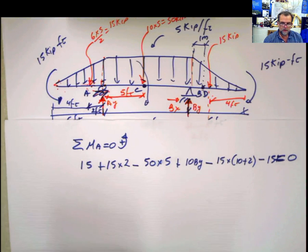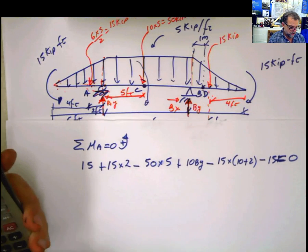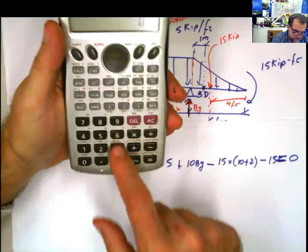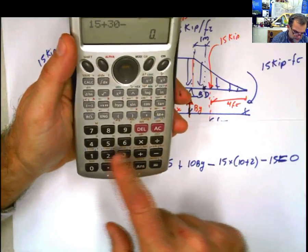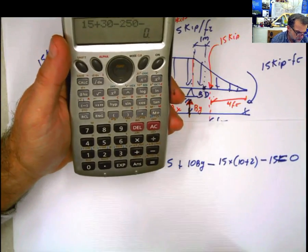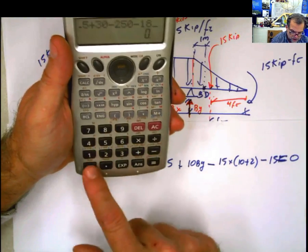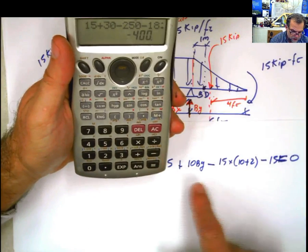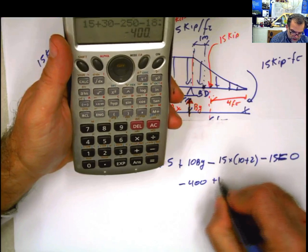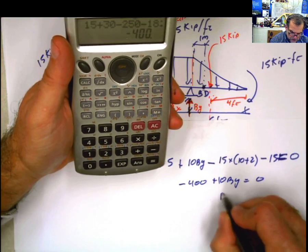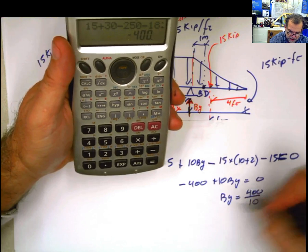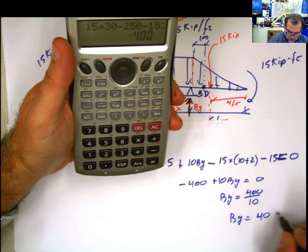Using the calculator: 15 plus 15 times 2 is 30, minus 250, minus 12 times 15 is 180, minus 15. That gives negative 400. So negative 400 plus 10·By equals 0, meaning By equals 400 divided by 10 — By equals 40 kips.